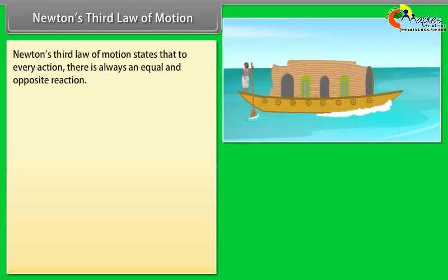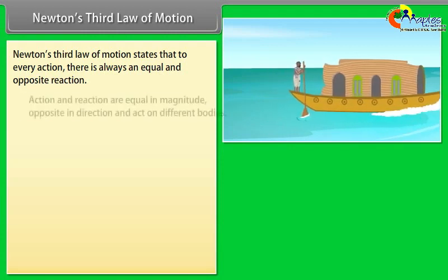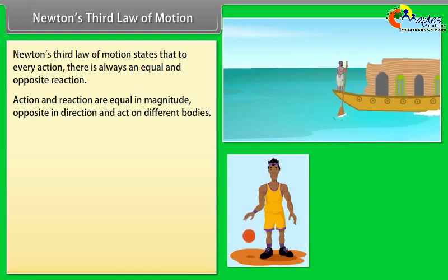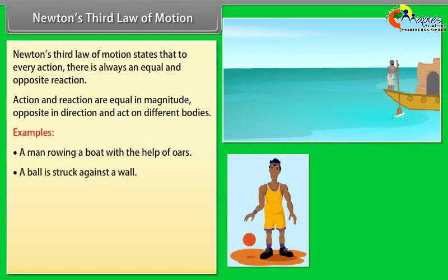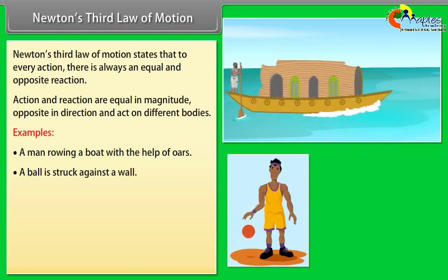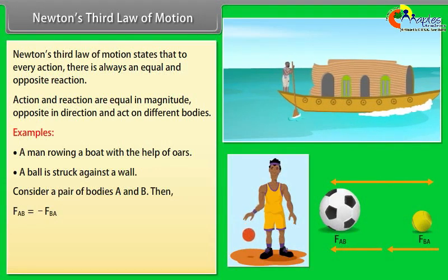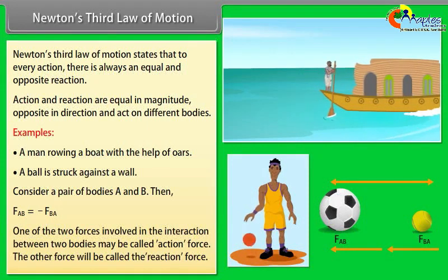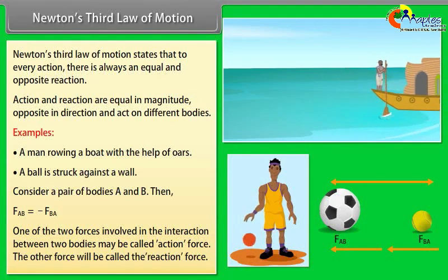Newton's third law of motion states that to every action there is always an equal and opposite reaction. Action and reaction are equal in magnitude, opposite in direction, and act on different bodies. Examples include a man rowing a boat with oars and a ball bouncing on the ground. For a pair of bodies A and B: F_AB = −F_BA. One of the two forces may be called the action force, and the other the reaction force.